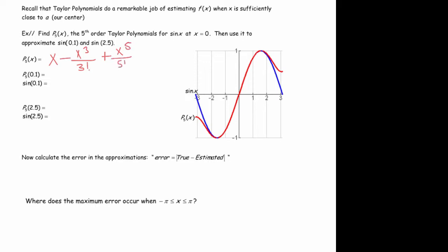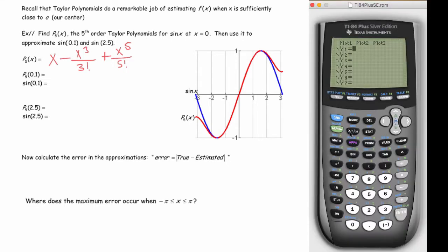So it's graphed here to the right along with sine of x. And you can see that it does a really good job of approximating sine of x. In fact it looks just like it towards zero, the closer you are to zero. The farther away from zero you get, the worse job it does.